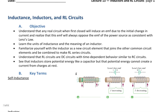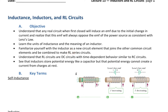Our objectives are to understand that any real circuit, when first closed — when it's turned on — will induce an EMF due to the initial change in current. A changing current creates a changing magnetic field, and a changing magnetic field induces a secondary current. We've seen this with Faraday's Law and Motional EMF. This induced EMF will always oppose the EMF of the power source, consistent with Lenz's Law.